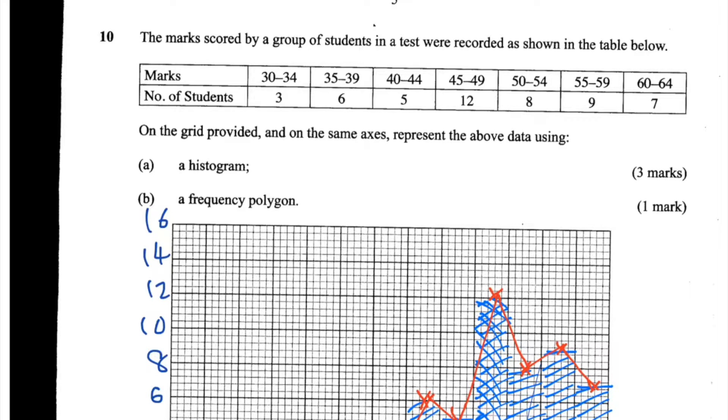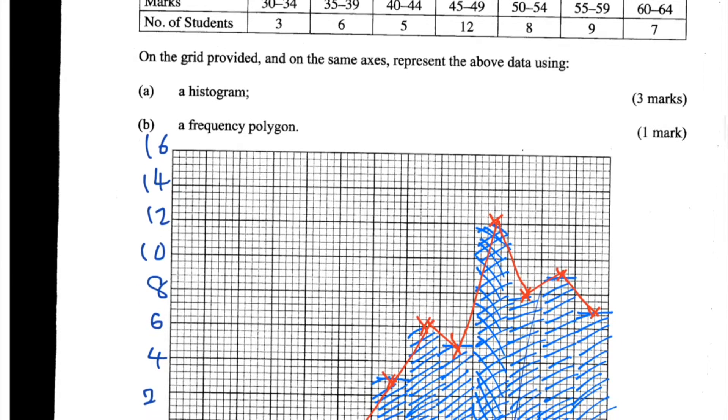On the grid provided and on the same axes, represent the above data using A, a histogram, and B, a frequency polygon. So I've done this question already because it can take a bit of a while to draw the graph, so I thought I might as well just talk through the process rather than doing it all because that would make a very long video.